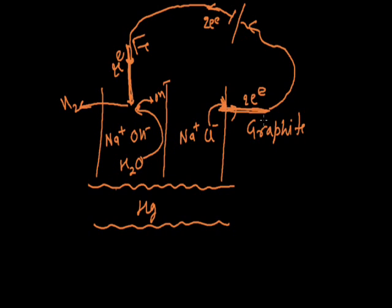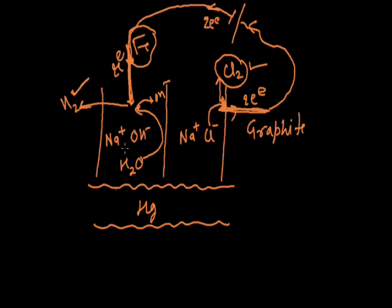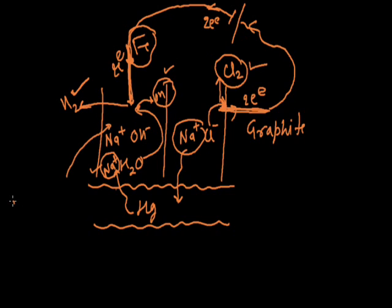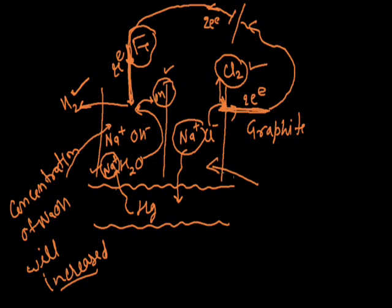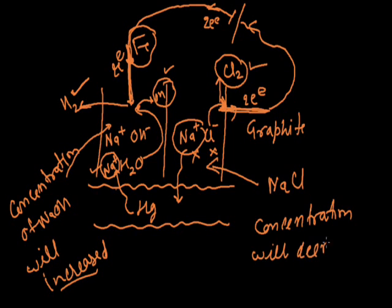Cl⁻ ions come to the graphite anode and convert into Cl₂ gas. So at the graphite anode, Cl₂ is released. Eventually the NaCl will be used up and new formation of NaOH will occur.